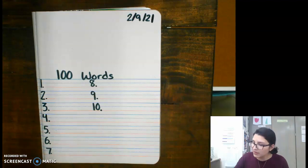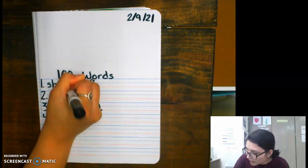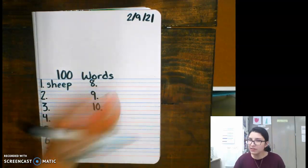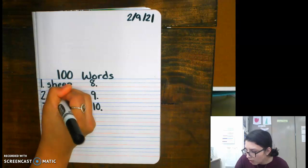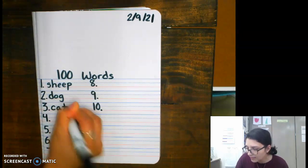So in the read aloud video, I gave you some examples. Sheep. If you don't want to spell it, that's okay, just do your best. Sheep, dog, dog, cat, cats.